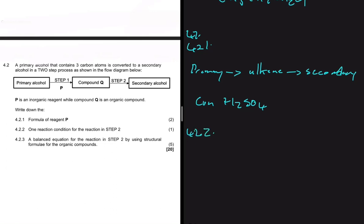For 4.2.2, give one reaction condition for the reaction in step two. Step two is hydration, because we are moving from an alkene to an alcohol. For hydration to take place, we need H2O in excess.